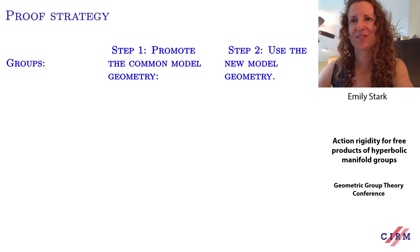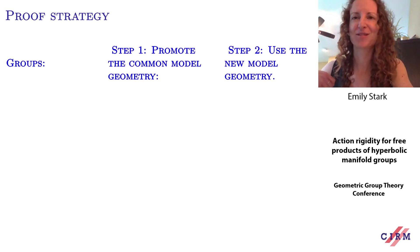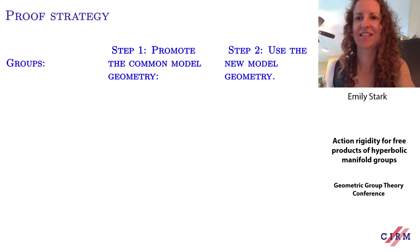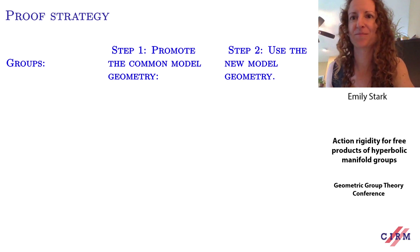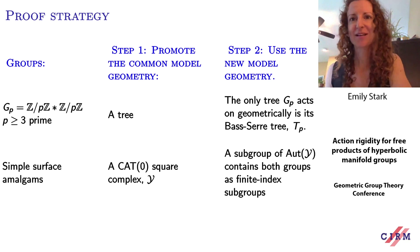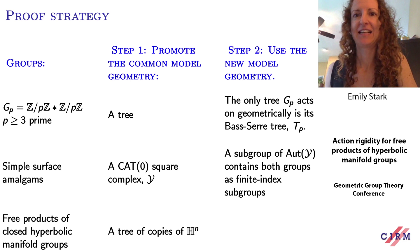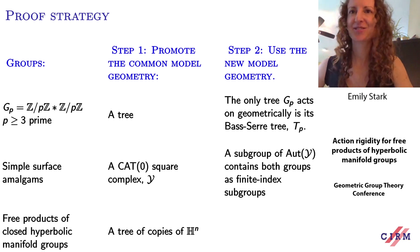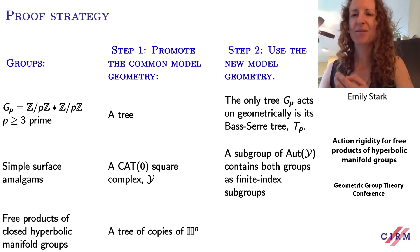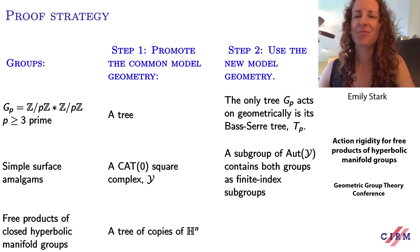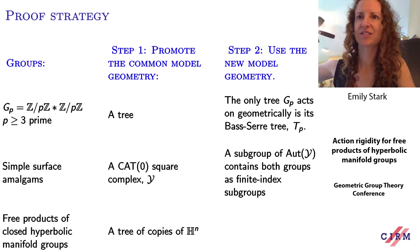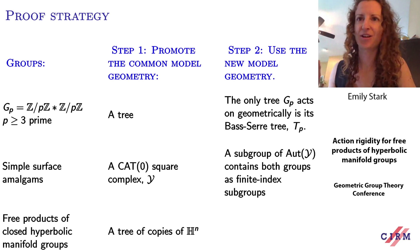The proof of the action rigidity theorem follows the same strategy as the previous two results: first promote the common model geometry to a nice space, then use this to show the groups must be commensurable. For virtually free groups, you can promote the common model geometry to a tree. For simple surface amalgams, you can promote it to a CAT(0) cube complex. For free products of closed hyperbolic manifold groups, the first step of the proof is to promote the common model geometry to a tree of copies of hyperbolic n-space glued to each other along intervals in a tree-like fashion. That's the standard model geometry for one group, and you can promote an arbitrary common model geometry to this nice one.